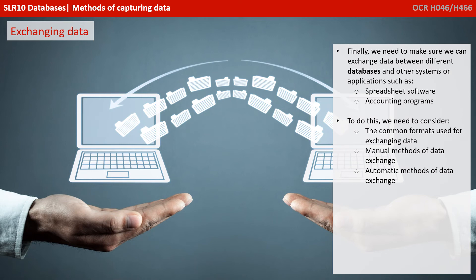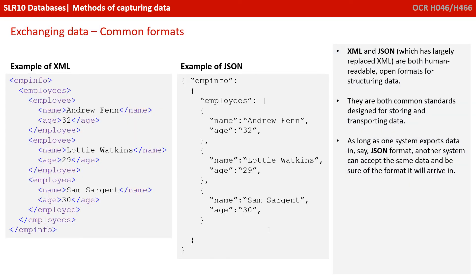Finally, we need to make sure we can exchange data between different databases and other systems or applications, such as spreadsheet or accounting programs. We need to consider common formats for data exchange, as well as manual and automatic methods. XML and JSON — which has largely replaced XML — are both human-readable, open formats for structuring data. They are common standards designed for storing and transporting data between systems. As long as one system exports data in JSON format, another system can accept the same data and be sure of the format it will arrive in.